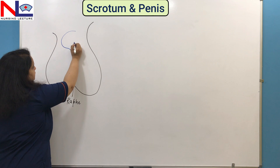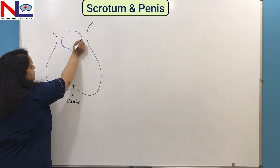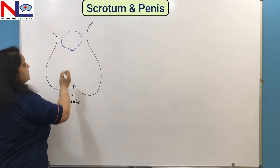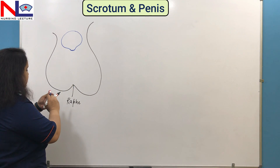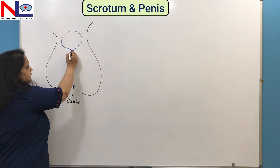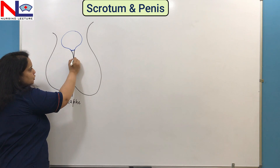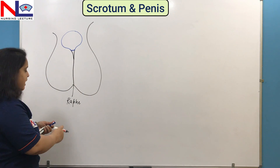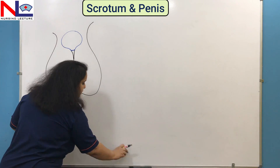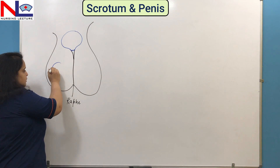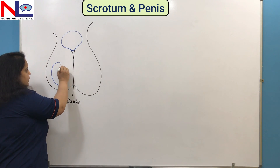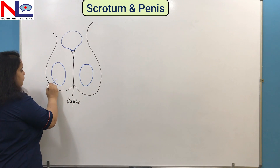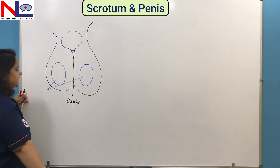The scrotum is mainly formed by skin and a subcutaneous layer, and it extends from the root of the penis. Here is the cross-section of the penis. The scrotum hangs from the root of the penis, and internally this sac is divided into two parts. In each part there is a male gonad, which is an oval-shaped structure. Internally, the male gonads — that is, the testes — lie within this scrotum.